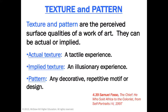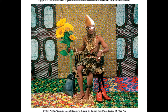A pattern is a repetitive motif or design. One student amazingly described texture as a pattern you can feel — I thought that was a really good observation. The example we're going to look at is Samuel Faso's 'The Chief, He Who Sold Africa to the Colonists.' This is a really potent contemporary art piece with a lot of meaning pointing towards slavery and colonization, but for our purposes we're really looking at the patterns in the background.